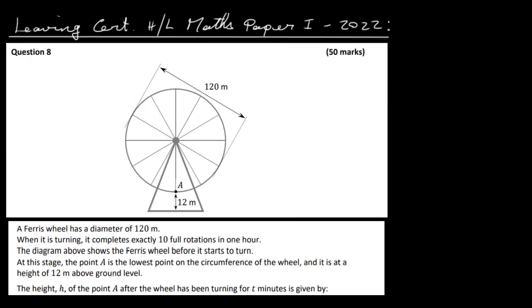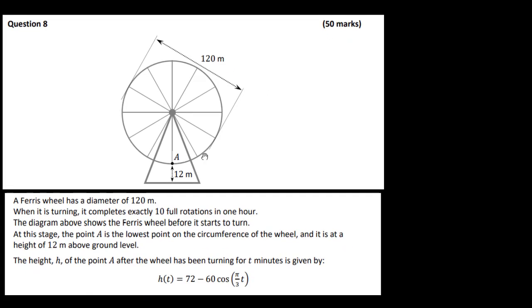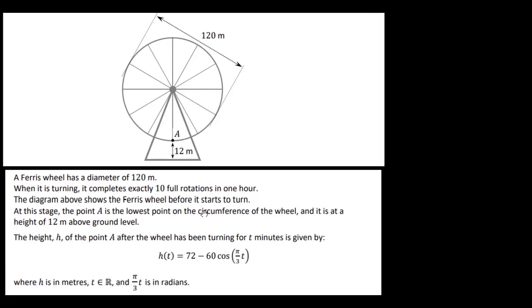Let's have a look at the Leaving Cert Higher Level Maths Paper 1 for 2022, question 8. We have a Ferris wheel with a point A on it which is 12 meters above the ground. The diameter is 120 meters. A Ferris wheel has diameter 120 meters, and when turning it completes exactly 10 full rotations in one hour. The diagram shows the Ferris wheel before it starts to turn, with point A at its lowest point on the circumference at a height of 12 meters above the ground.